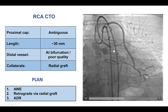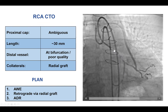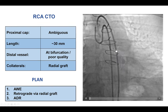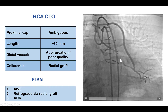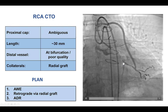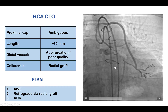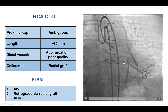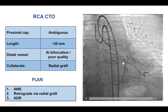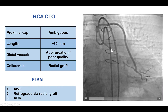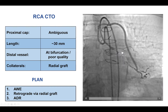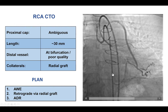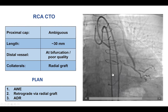So here we have a circumflex CTO with ambiguous proximal cap, length of about 30 mm, a bifurcation close to the distal cap, and then there is a radial graft going to the obtuse marginal branch. Our plan was to try first with wire escalation and then retrograde via the radial graft, followed by antegrade dissection re-entry.